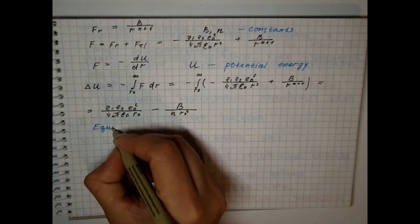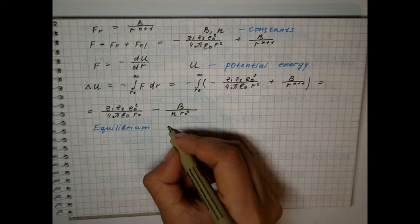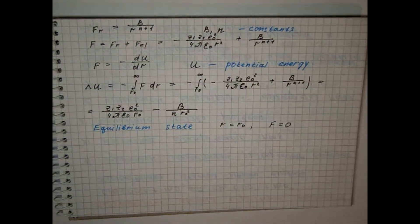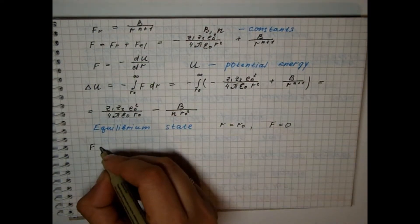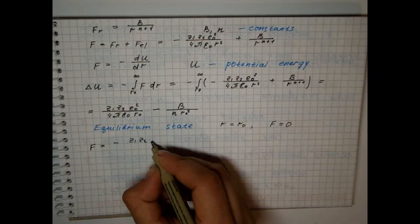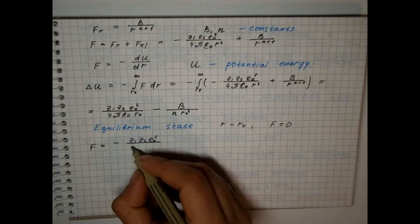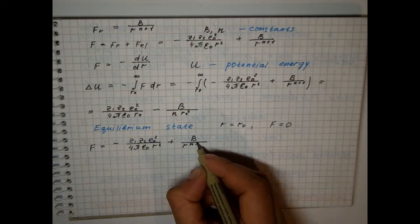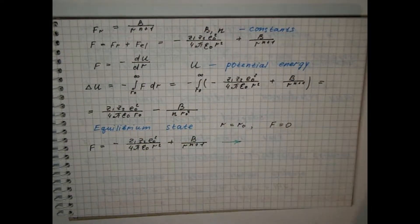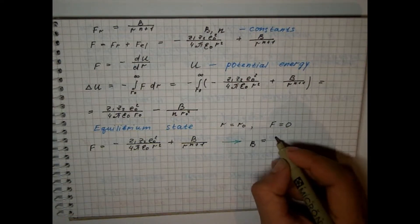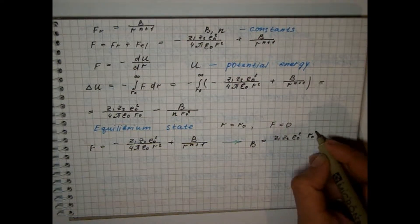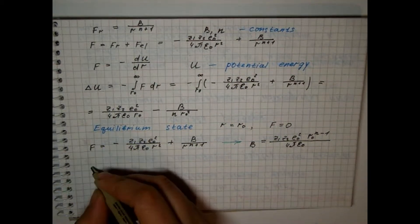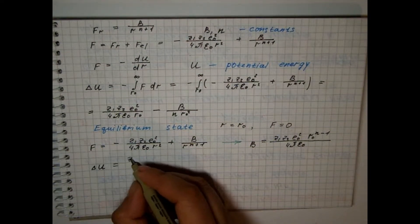In equilibrium, then from the equation we can calculate the constant B, which will be equal to... And the equation for potential energy is simplified.